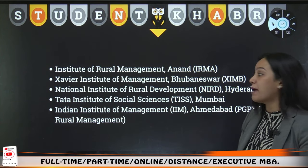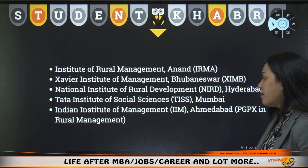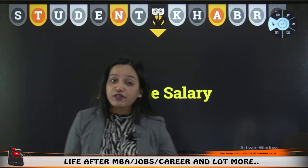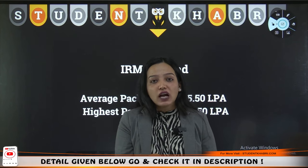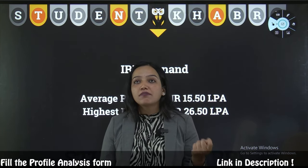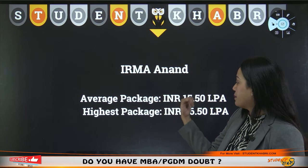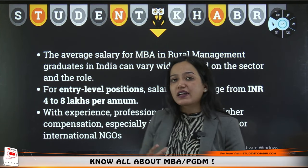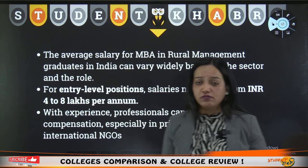About colleges — IRMA Anand, then IIM Bhubaneswar, NIRD Hyderabad, TISS, IIM Ahmedabad PGPX rural management. Talking about average salary: if you do a good college like IRMA, it is around 15 LPA and the highest package is 26 LPA. But in many colleges, if you go to a lower level, the average package is 5–6 LPA, maybe 6.5, not more than that. Once you gain experience then you can go for better opportunities. This is a slight disadvantage of the specialization.